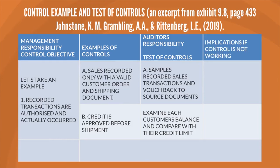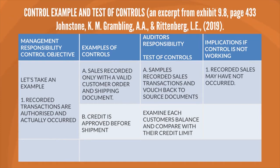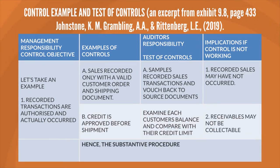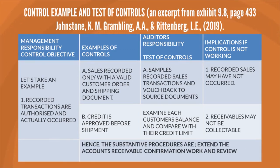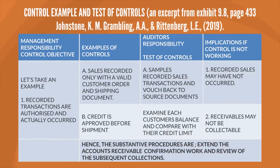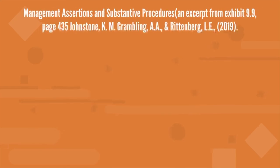Now, what would be the implication if this control is not working? For the first one, recorded sales may have not occurred at all. For the second, the receivables may not be collectible. Hence, substantive procedures need to be extended: accounts receivable confirmation needs to be carried out and there is a need to review the subsequent collections.